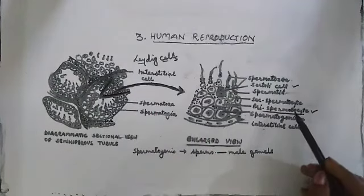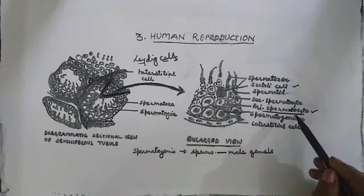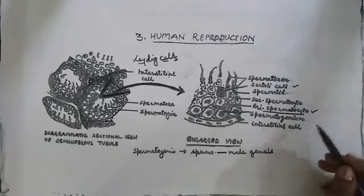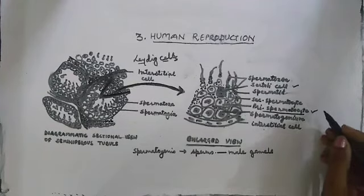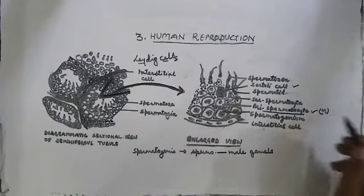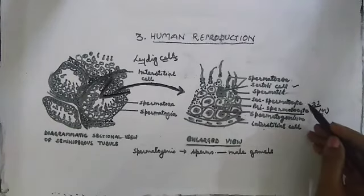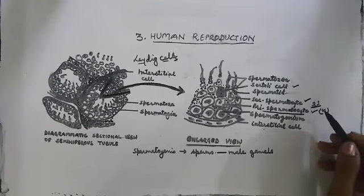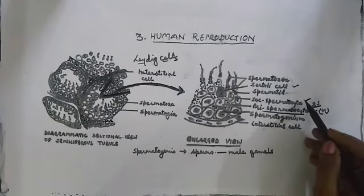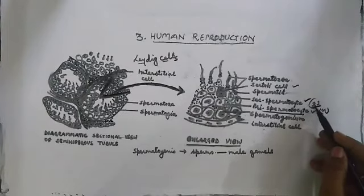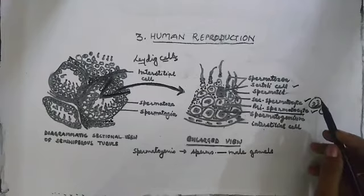The primary spermatocyte goes for meiotic division. In the first meiotic division, or meiosis I, it gives rise to haploid cells. As soon as it goes for meiotic division, it gives rise to haploid cells with 23 chromosomes. This cell is now termed as secondary spermatocyte. Secondary spermatocyte is formed after meiosis I of the primary spermatocyte, and the ploidy level has been reduced to 23 chromosomes.